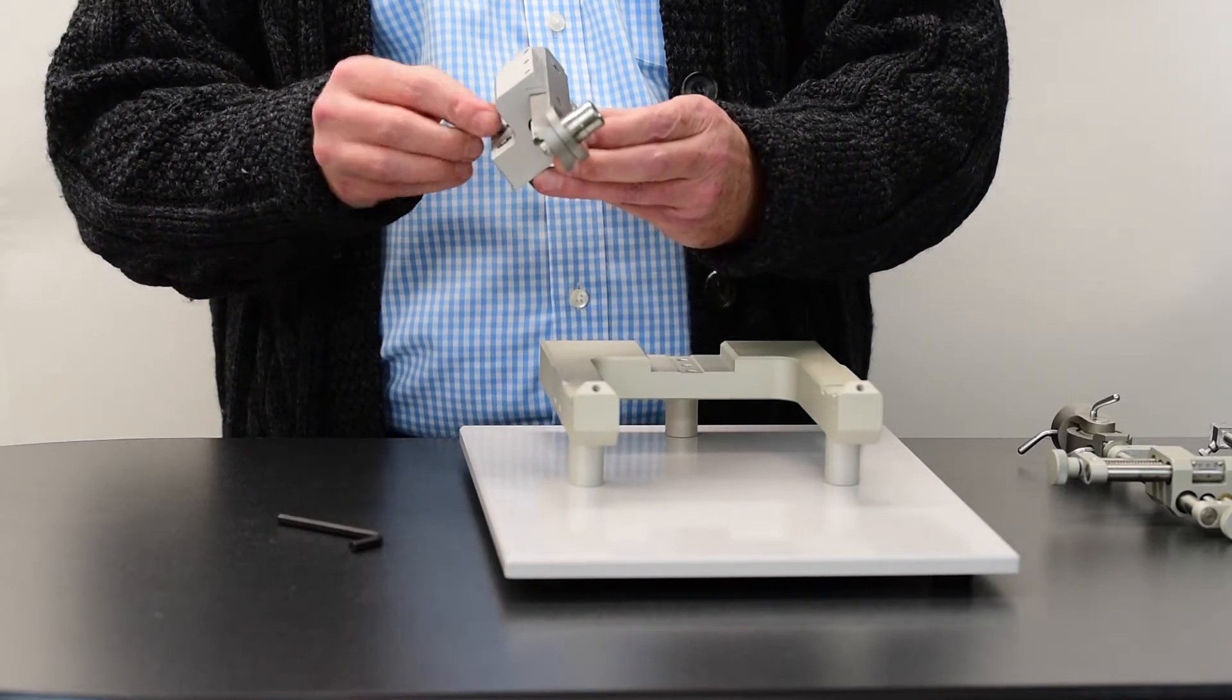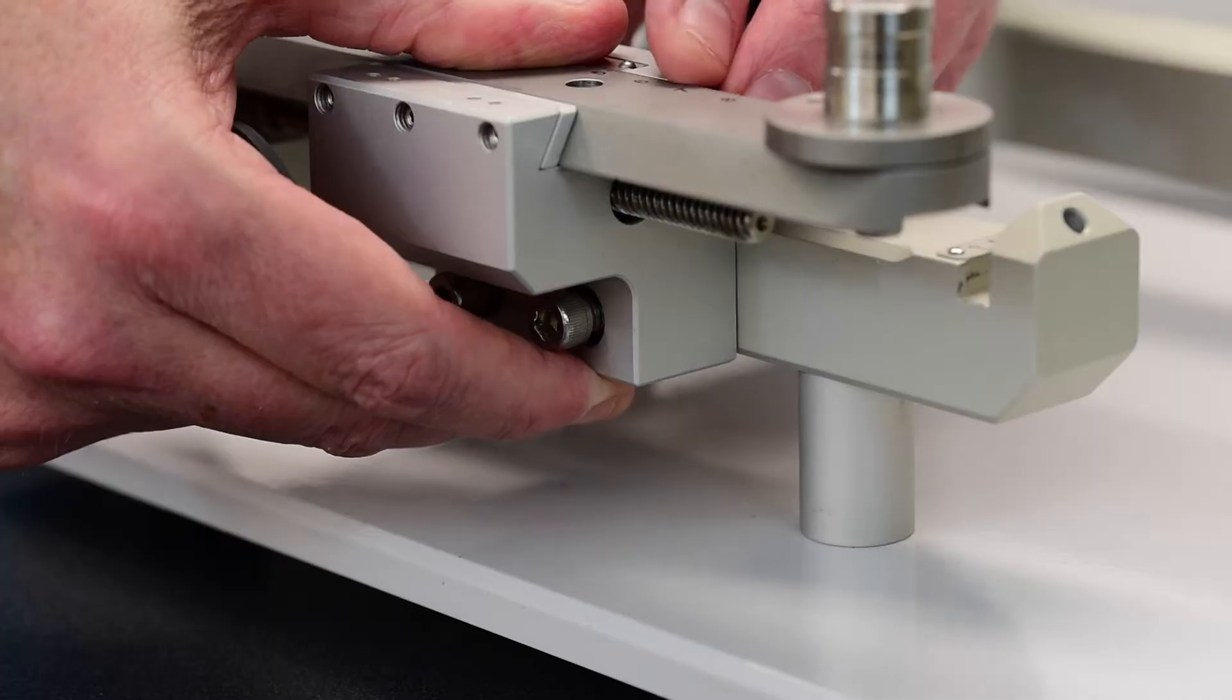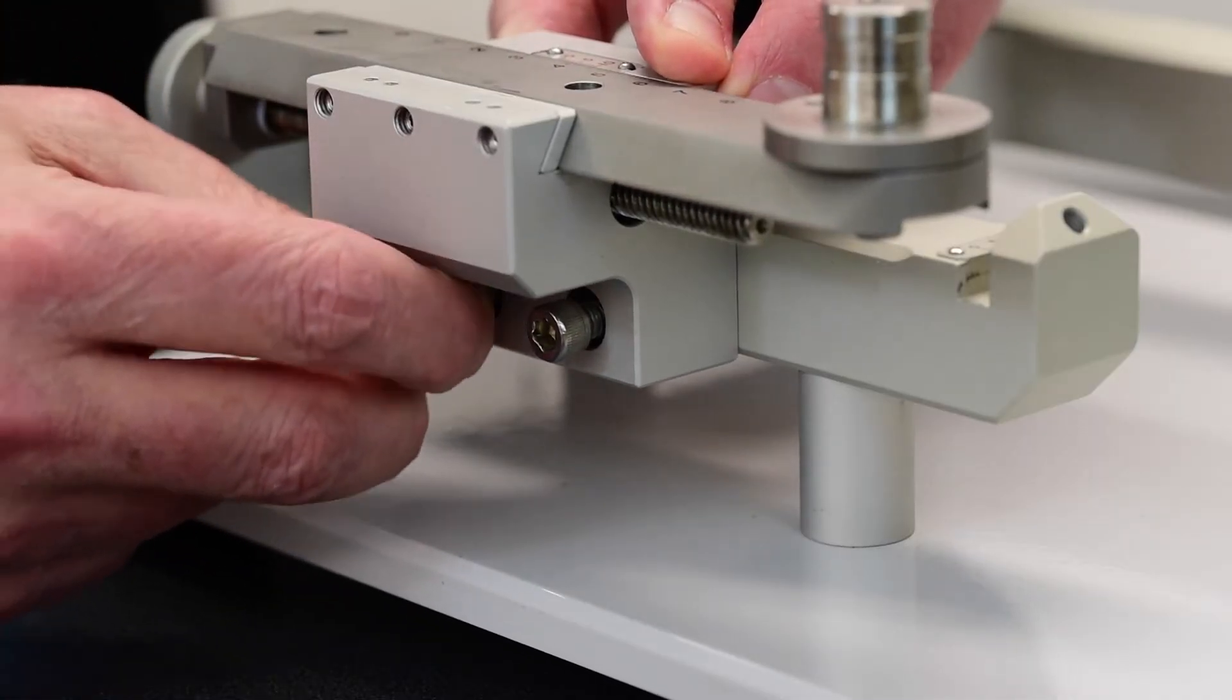Simply thread the screws through the two holes on the AP drive. Line them up with the two holes onto the U-frame.